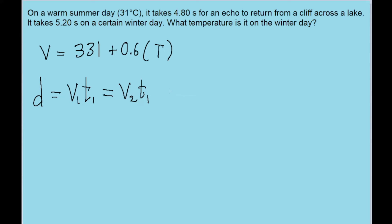Let's write this out more fully. The times are both given to us and one temperature is given. For V₁, we have V₁ = (331 + 0.6 × 31) × 4.80 seconds. Everything in this term corresponds to the summer day.